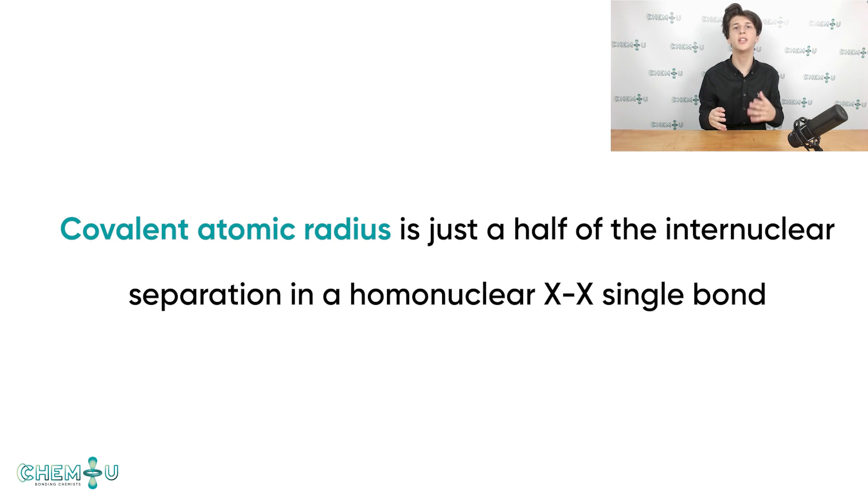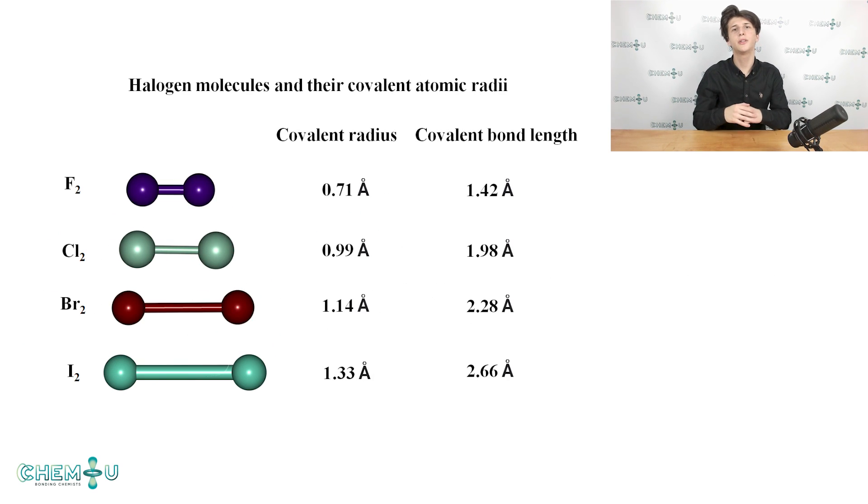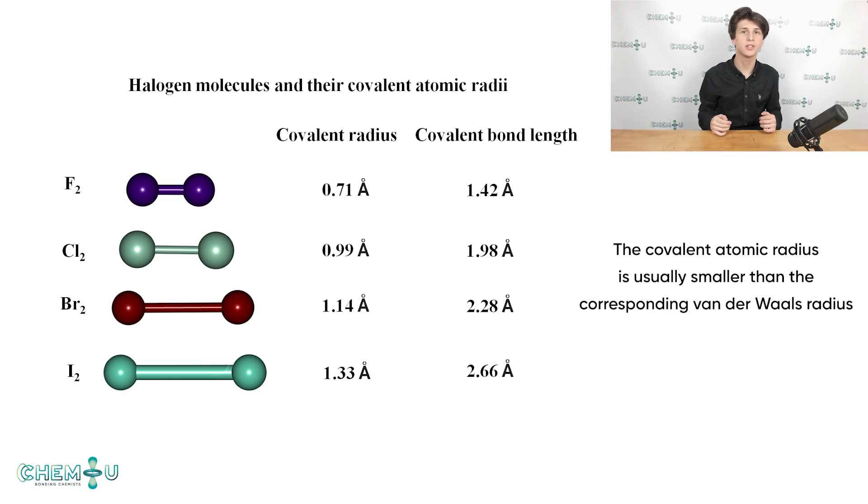Now we have enough knowledge to define the covalent atomic radius. It is just half of the internuclear separation in a homonuclear X-X single bond. Here on the slide you can see the halogen molecules, their covalent bond length and covalent atomic radii. I would also like to mention that the covalent atomic radius is smaller than the corresponding van der Waals radius.